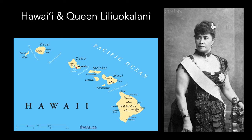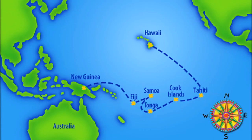Hawaii refers to a chain of eight islands located in the middle of the Pacific Ocean, sitting at roughly the same latitude as central Mexico. In the late 19th century — around 1890 — Hawaii had a monarchy, and their monarch was Queen Liliuokalani. In the 1890s, the United States would make a bold move to capture Hawaii. But let's provide some background, because it's a great story. Let's go all the way back to the year 800.